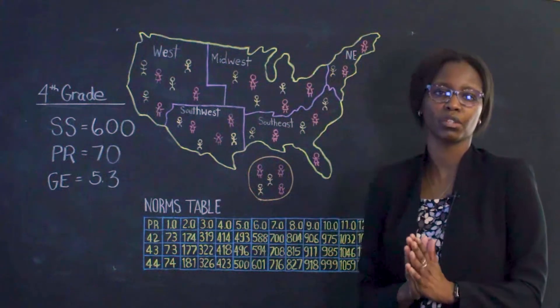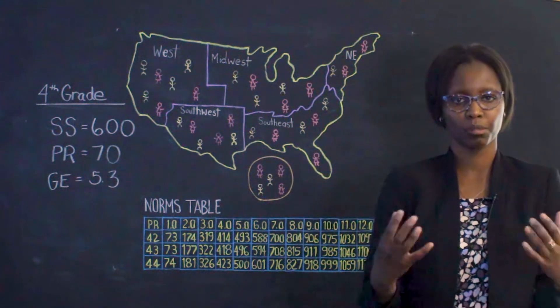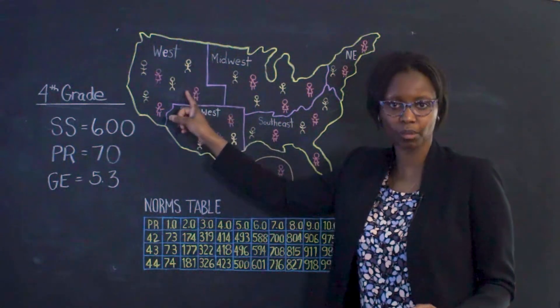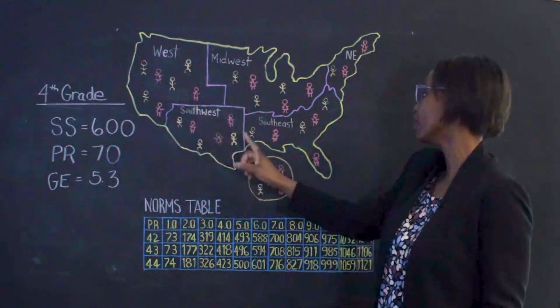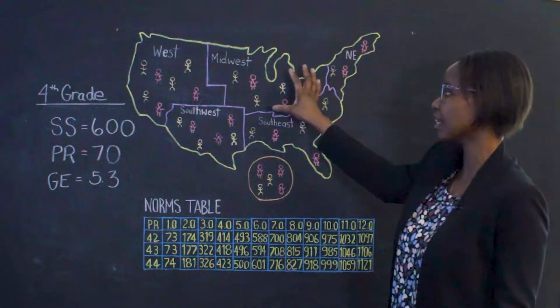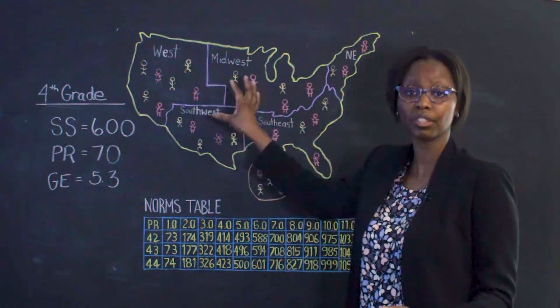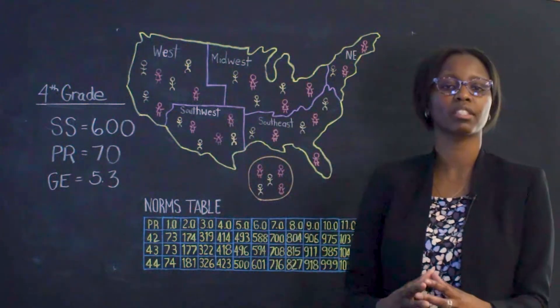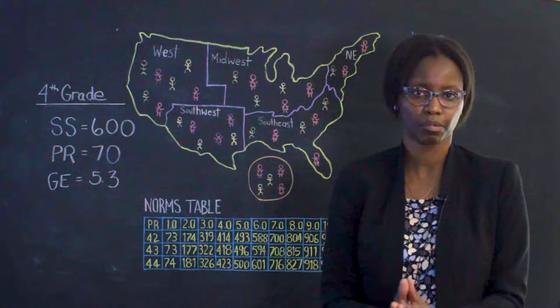What we should also note is that that sample has to be representative. For example, we don't want all our students in the sample to be from the western part of the country or the southeast or the northeast. We want a good sampling of students from every region and by gender and other important characteristics that we know affect student performance.